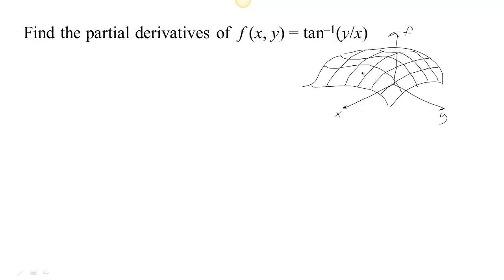We could ask: what if I hold one of the variables constant and take the derivative with respect to the other? If I hold x constant and take the derivative with respect to y, I'll be calculating the slope of that function for different values of y along that line of constant x. Or if I hold y constant and take the derivative with respect to x, I'll be finding the slope at each x value along that curve. Since we're holding one variable constant and just changing one, we call that a partial derivative. You just hold one variable constant — remember the derivative of a constant is zero — and then take the derivative.